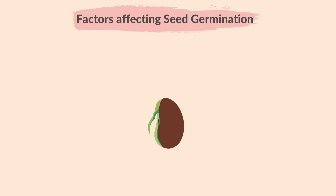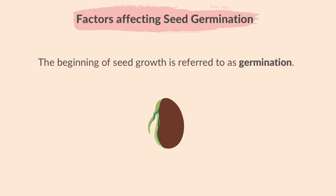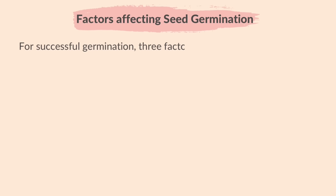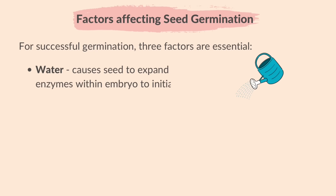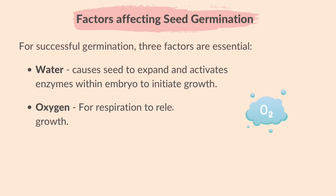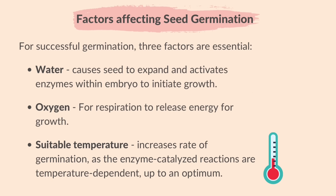Finally, let's learn about germination. The beginning of seed growth is referred to as germination. Water causes the seed to expand and activates enzymes within the embryo to initiate growth. Oxygen is needed for respiration to release energy for growth. A suitable temperature is needed — this increases the rate of germination as enzyme-catalyzed reactions are temperature-dependent up to an optimum.